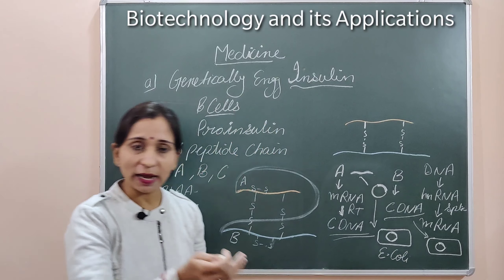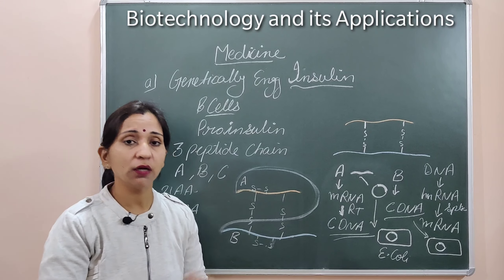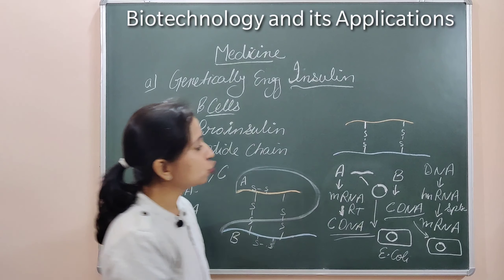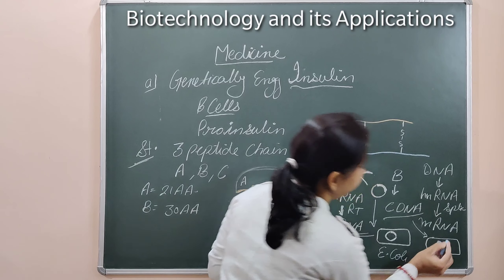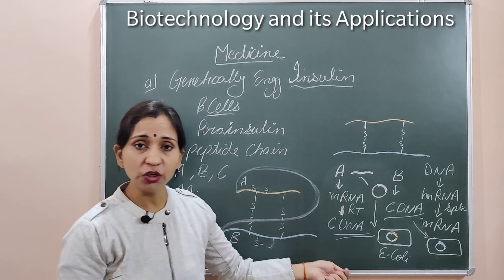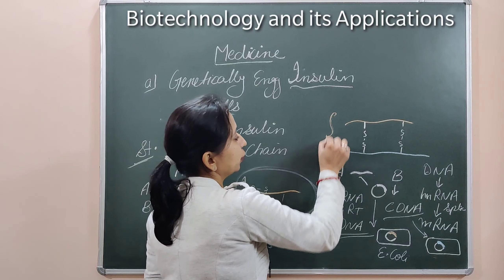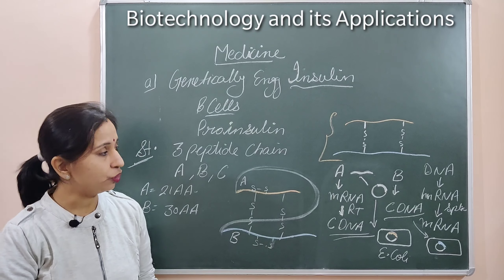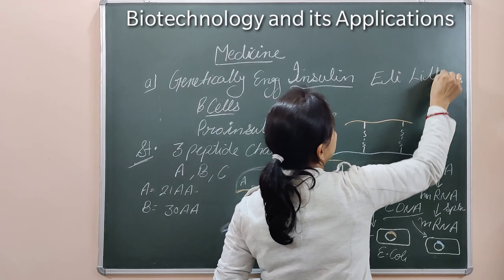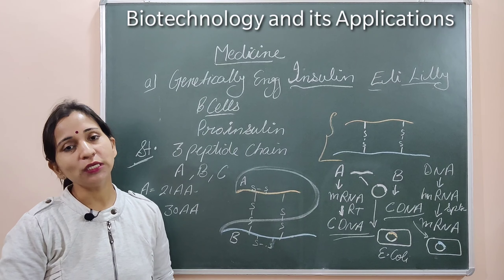Then these two chains were isolated from the bacteria and combined together in such conditions that disulfide bonds formed between the A and B chains. When these disulfide bonds formed, the resulting insulin became mature insulin. This insulin was produced by an American company — Eli Lilly — using recombinant DNA technology.